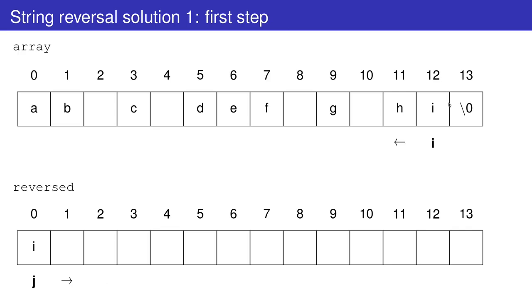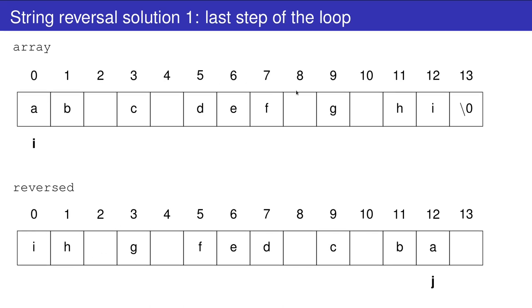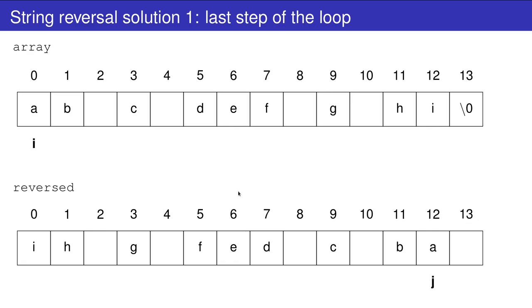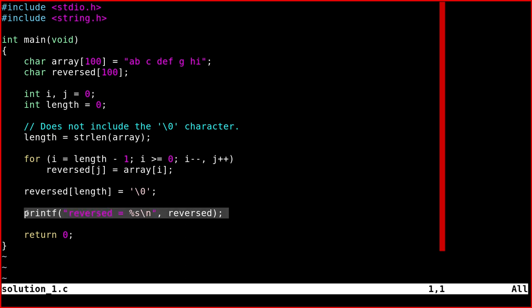We copy characters one by one: i, h, whitespace, etc. Finally, we add the terminating character at the end and print the string normally.